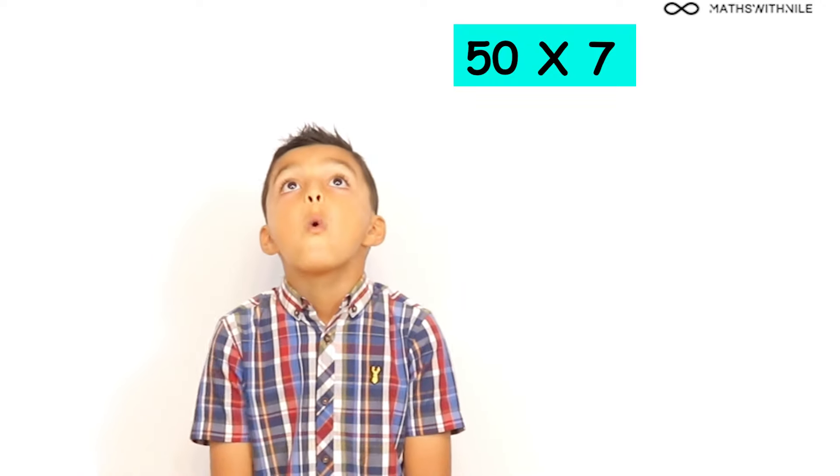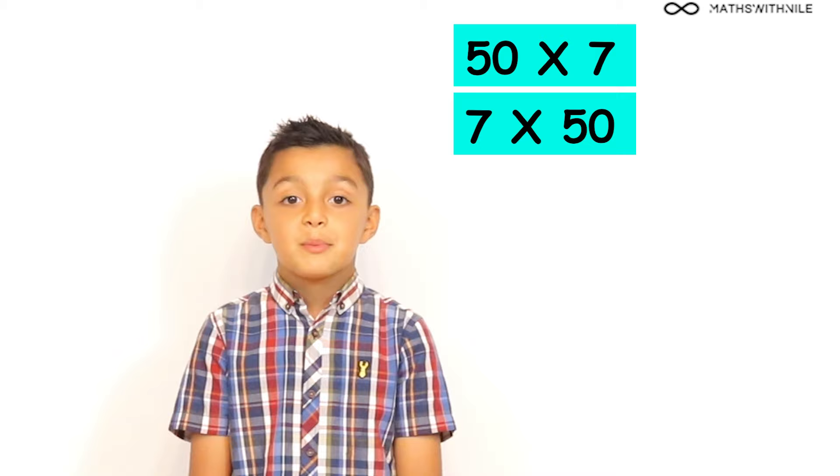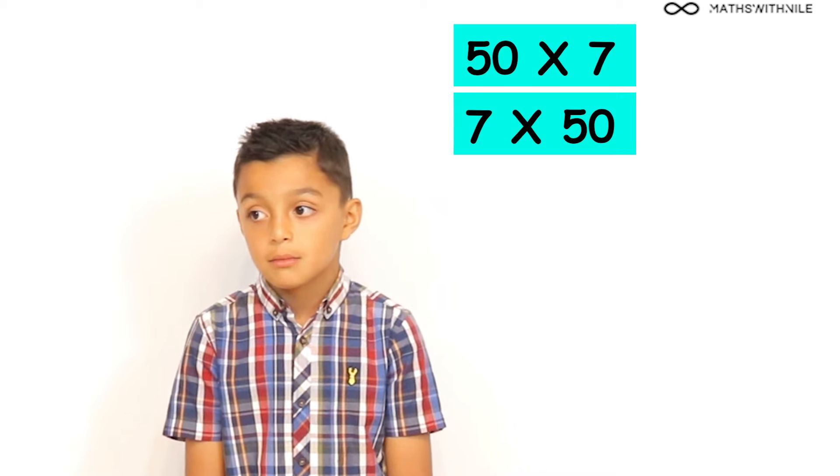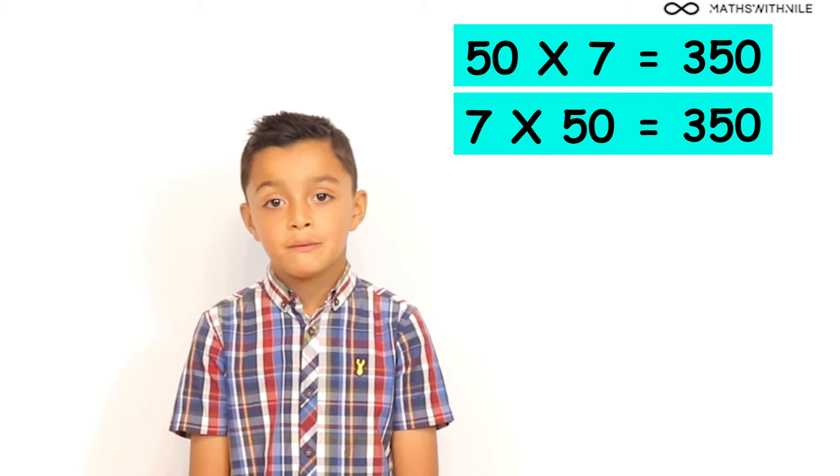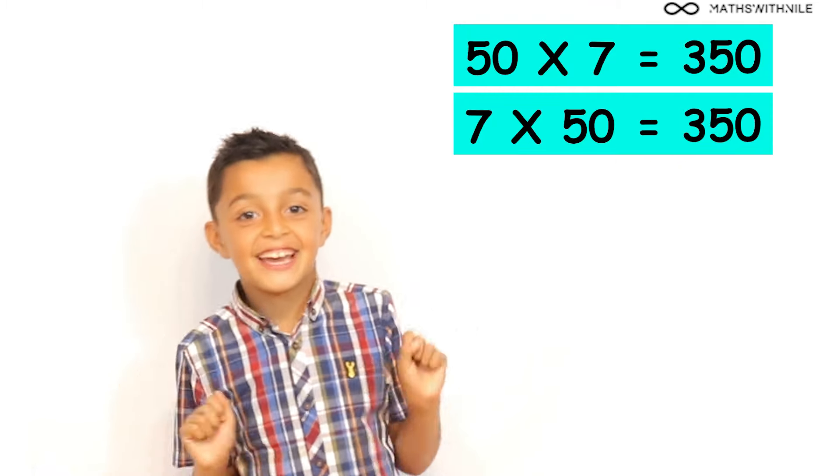What is... It's going to get a bit tricky. The last couple of ones. You ready? Yeah. What is 50 times 7? 7 times 50? 7 times 50. 350. Excellent Niall. Very good. Yay.